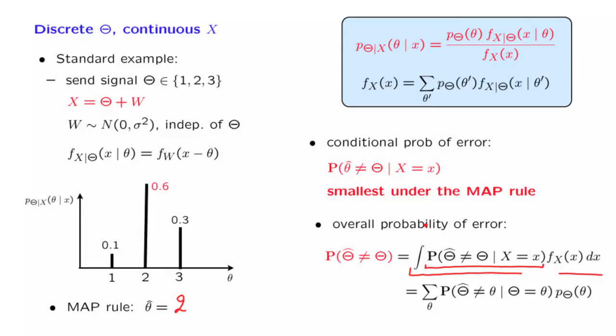And therefore, the conclusion is that the overall probability of error is, again, the smallest possible when we use the MAP rule. And so the MAP rule remains the optimal way of choosing between alternative hypotheses whether x is discrete or continuous.